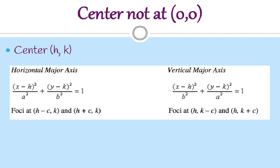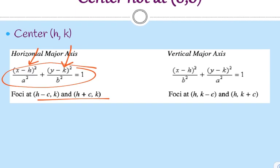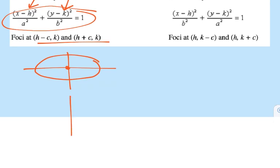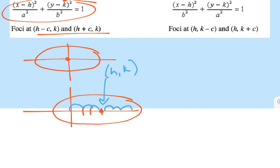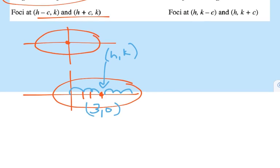If the center is not at (0, 0), you'll see an x minus h and a y minus k in the equation, and everything else looks the same. But now I have to adjust the foci. If it's a horizontal major axis and my center is shifted, when I add my foci I have to add and subtract c from my center (h, k). For example, if c is 2 and the center is (3, 0), then the foci are at (5, 0) and (1, 0).